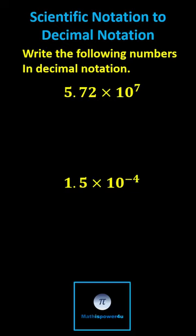For the first example, we begin with 5.72. Because we're multiplying by 10 to the power of positive seven, we know the number gets larger. We move the decimal point seven places to the right.